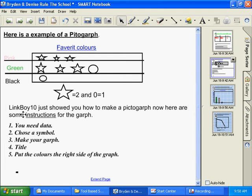Make your graph. Here is the graph that we made. You need your title. Our title is Favorite Colors. Number five, put the colors on the right side of the graph. Here's pink, green, and black.